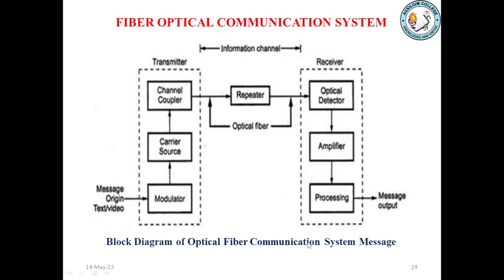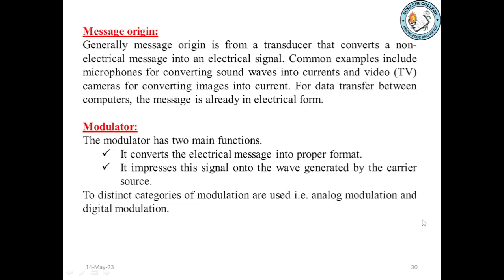In a fiber optical communication system, this is a block diagram of the optical fiber communication system. It has three sections: transmitter part, repeater part (information channel), and receiver part. The message origin is given to the modulator, then to the carrier source, then to the channel coupler, from which it is given to the information channel — the optical fiber. In the receiver section, we have an optical detector, which is given to an amplifier and thus processed. Finally, we get the message output.